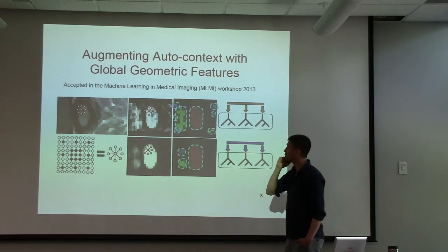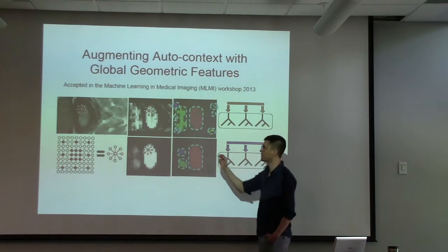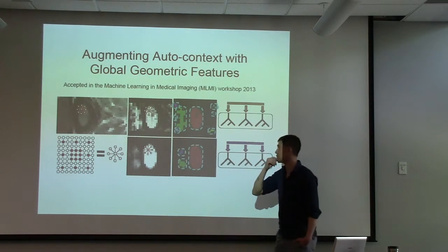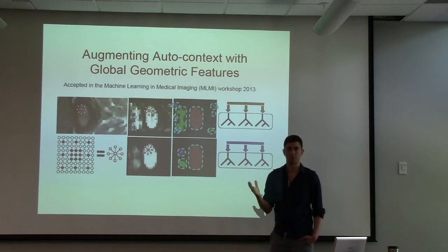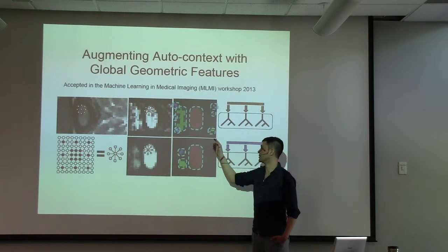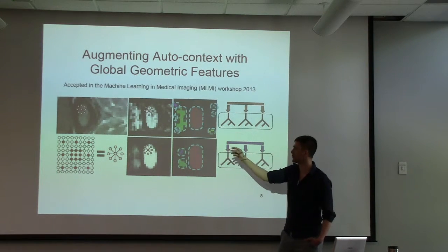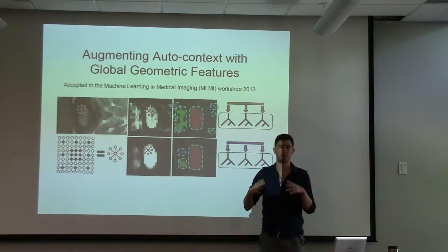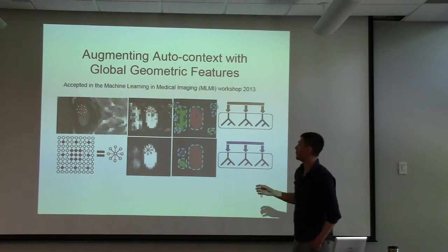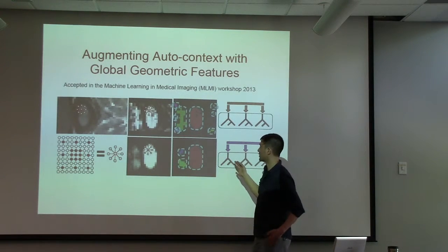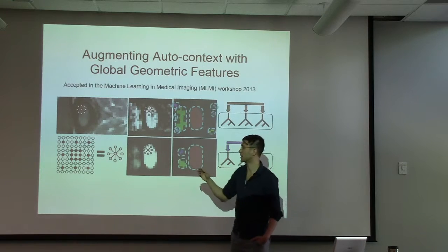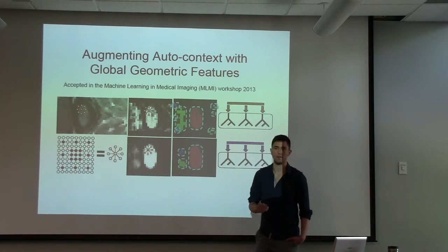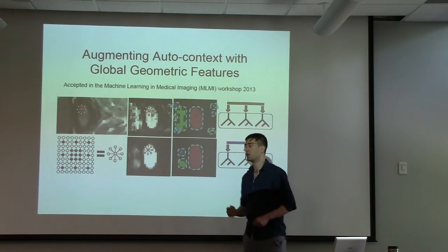So our contribution in this work was that we say not only can we use image information and these predictions, we can also try and incorporate higher level information where we looked at the connected components and tried to extract some features from here. So you can say what's the size of these shapes. Then we incorporated that in this auto-context framework, so not only do we include the image information, the neighboring labels, we also include the information about the connected component that it belongs to.